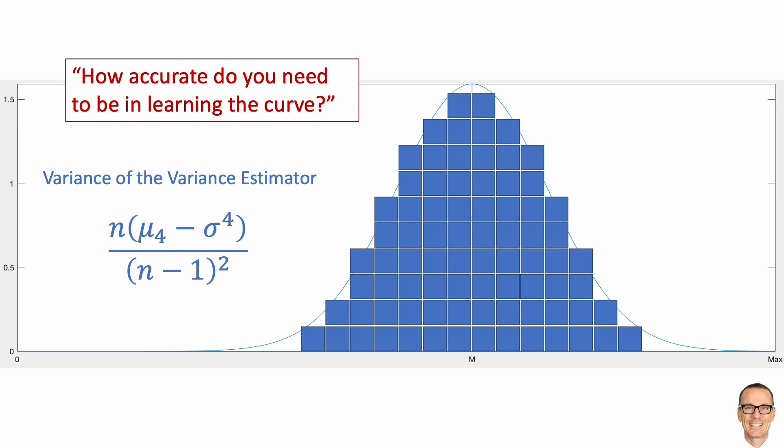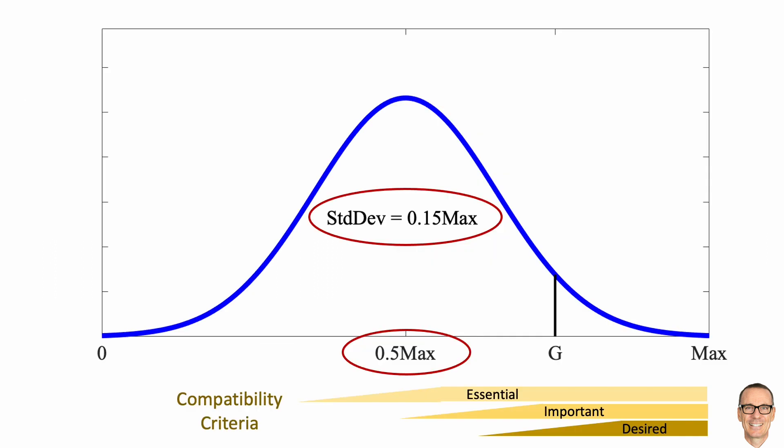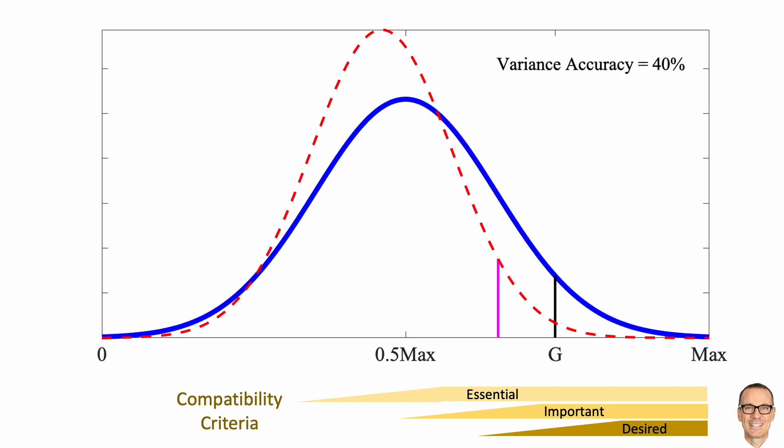So let's put some numbers on this. Let's assume your compatibility criteria mean that the true population bell curve has these parameters. But of course, you don't know these values and you want to learn them. Let's assume that you want to estimate the mean and variance to within 40% accuracy. Let's look at two possible curves you might measure from your random selection of people with this 40% level of accuracy.